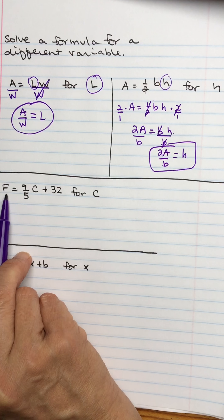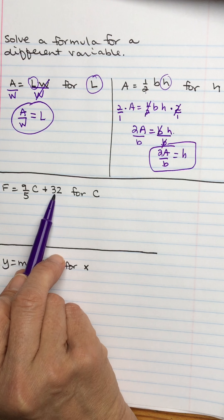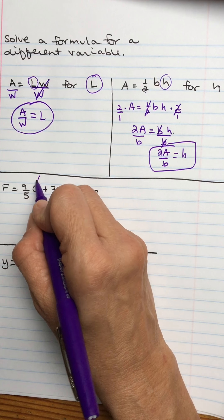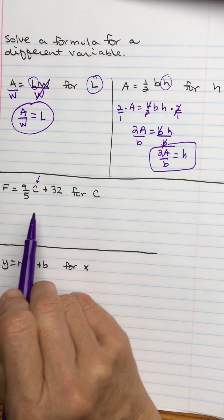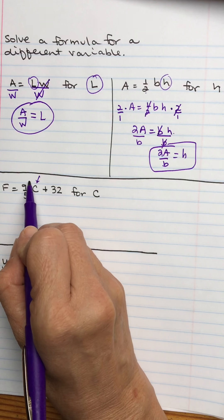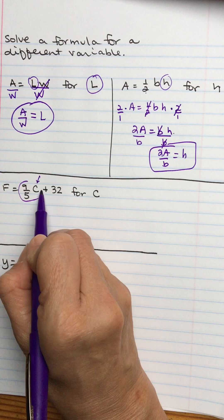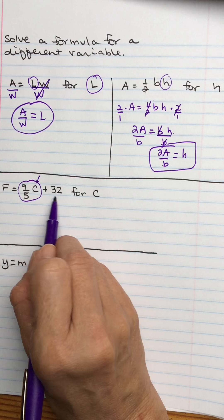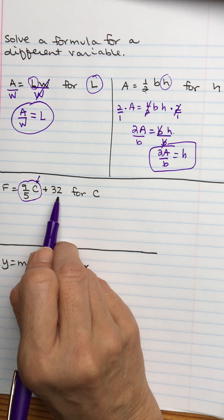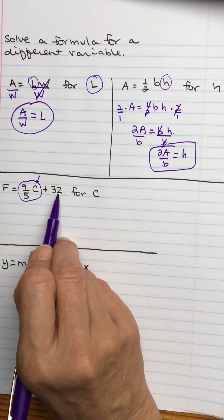Here is the formula that converts between degrees Fahrenheit and degrees Celsius. So F equals 9 fifths C plus 32, and we want to solve for C. So that would let us convert then between the other way. If we knew Fahrenheit, it would tell us Celsius.